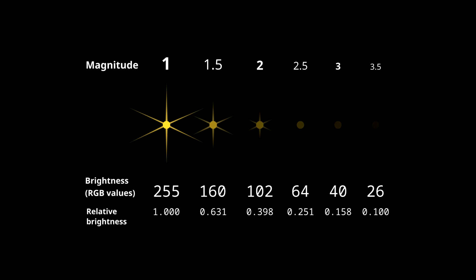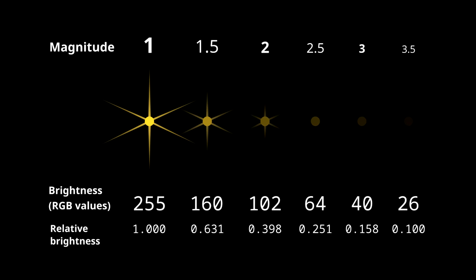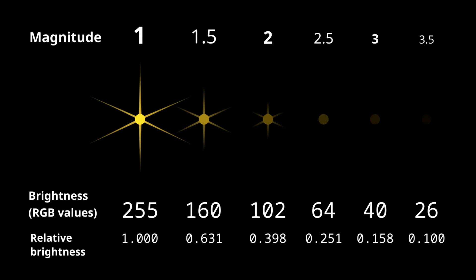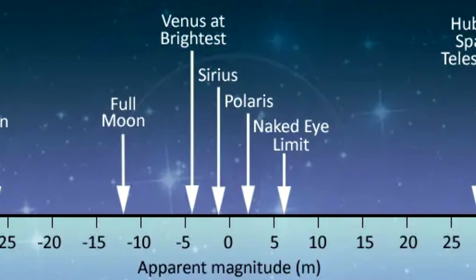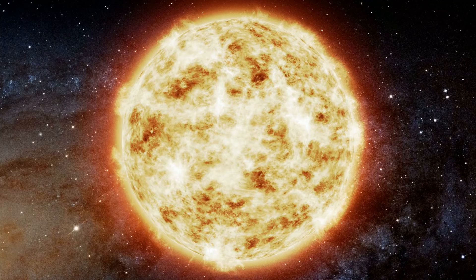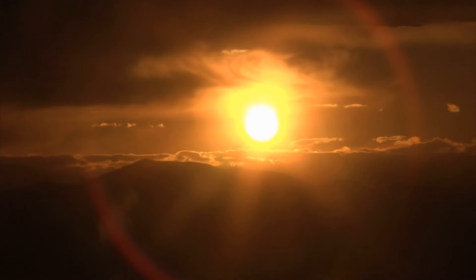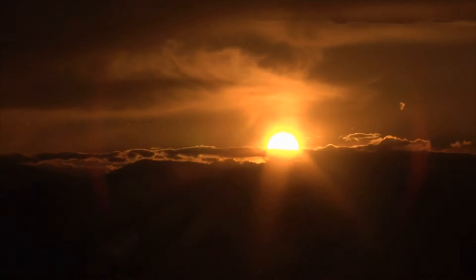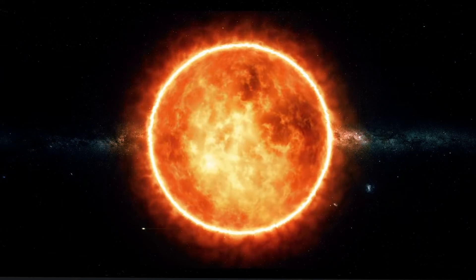A quick note on the astronomical unit of magnitude, this critical measure is used to evaluate the apparent brightness of celestial objects as viewed from Earth. The scale operates on a somewhat counterintuitive principle. A smaller magnitude value signifies a brighter appearance. For instance, a star rated with a magnitude of 1 is much brighter than one rated at a magnitude of 5. This logarithmic scale means that each whole number increase in magnitude corresponds to a decrease in brightness by a factor of approximately 2.5.